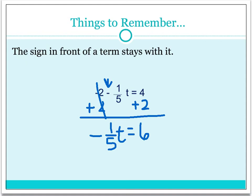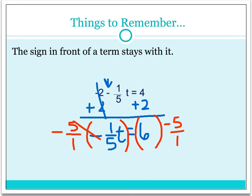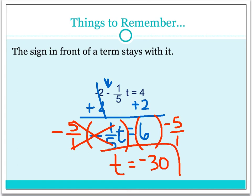Now, this is multiplication, and to undo multiplication we would use division, except since it's a fraction, the way we divide fractions is we multiply by the reciprocal. So we're going to multiply each side by the reciprocal of negative 1/5, which is negative 5 over 1, on both sides. These cancel out, leaving us t is equal to 6 times negative 5, which is negative 30, and the 1 in the denominator is not needed. So the solution is t is equal to negative 30.